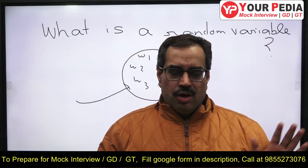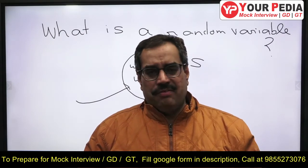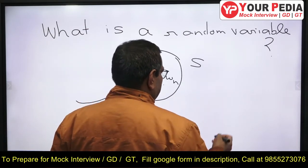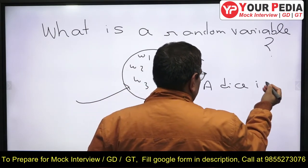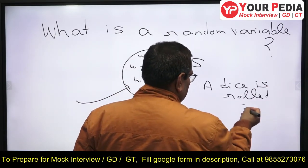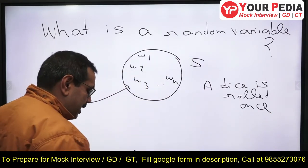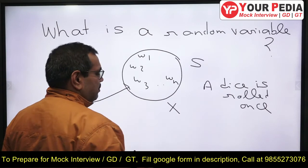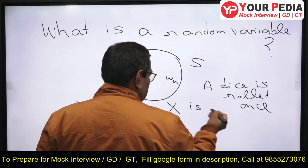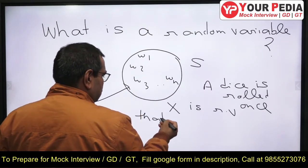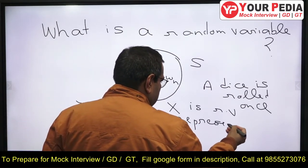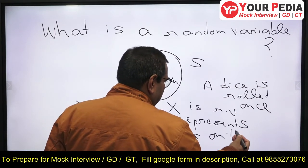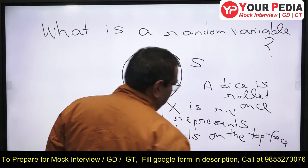To further explain, you can say: suppose we have a dice and we roll it once. You can take an example after telling the definition and explain with the help of that example. A dice is rolled once. Suppose X is a random variable that represents the number of dots on the top face.